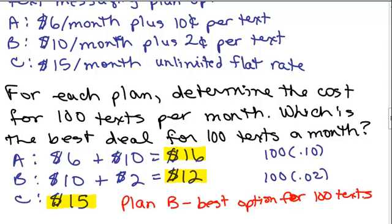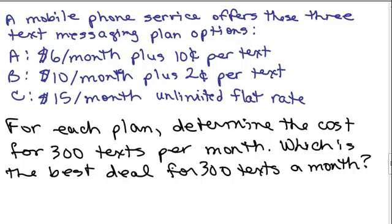Obviously, there's something in between 20 and 100 texts where either it's exactly the same amount or approximately the same amount, and where you'd want to decide whether you wanted to choose Plan B over Plan A. Plan A worked best for 20 texts and Plan B best for 100 texts. We'll figure that out in a minute, but first let's do one more problem. What if you'd use 300 texts a month, which would be the best option?